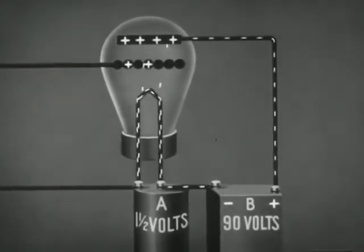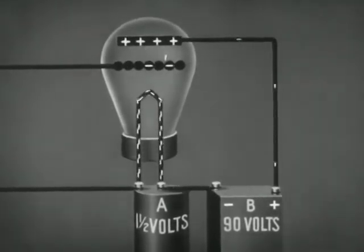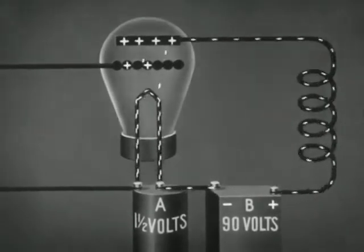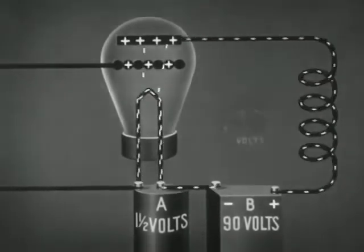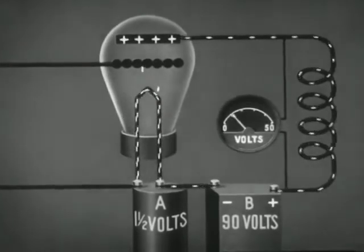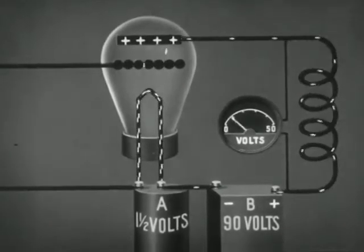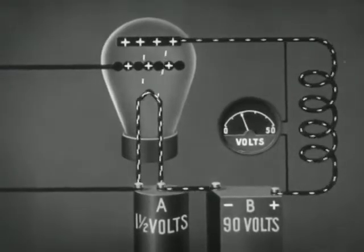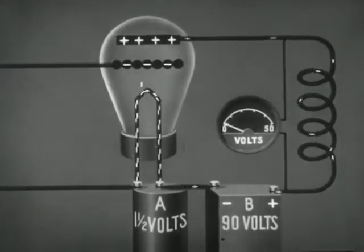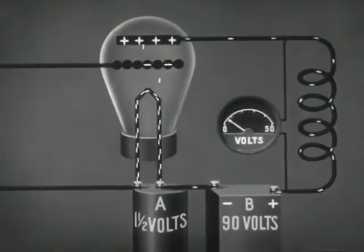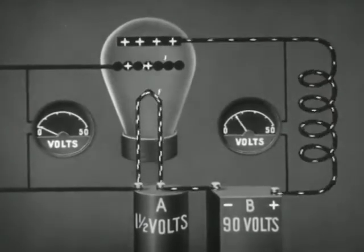The plate of the amplifier tube is connected to a load supplied by the primary winding of a transformer. As the plate current increases, the voltage across the primary increases. As the plate current decreases, the voltage across the primary decreases. Thus, the voltage across the primary coil will vary with the amount of plate current. These voltage variations are much greater than the voltage changes in the grid circuit.